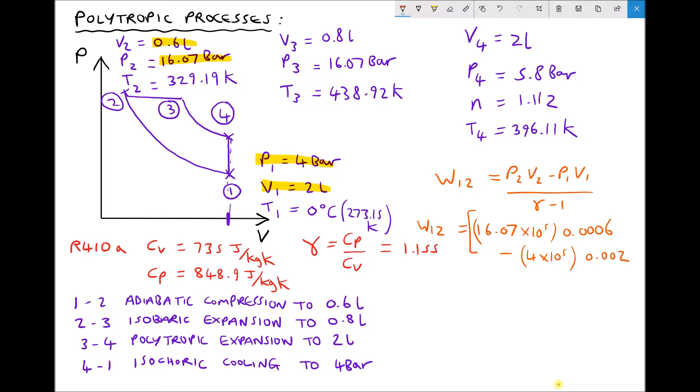It's all of that on top of our fraction divided by gamma minus 1. Well gamma is 1.155, 1.155 minus 1 is 0.155. Therefore W1 to 2 when we run that through the calculator equals 1059 joules.